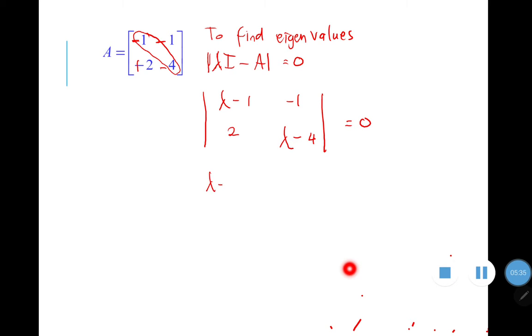So lambda minus one times with lambda minus four minus negative one times two equal to zero. So what you have lambda square minus five lambda minus four lambda plus four. And this one will be plus two. Plus four plus four. Equal to zero. So it will be lambda square minus five lambda plus six equal to zero.